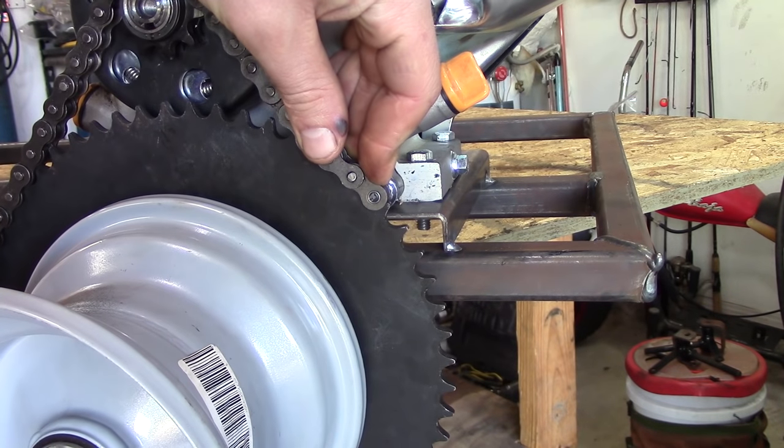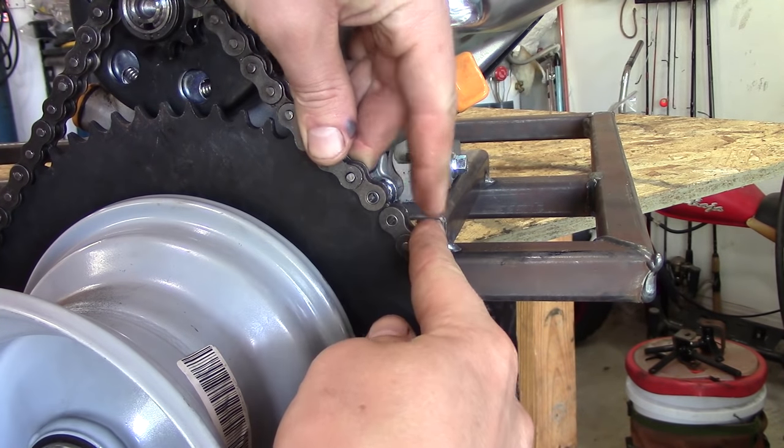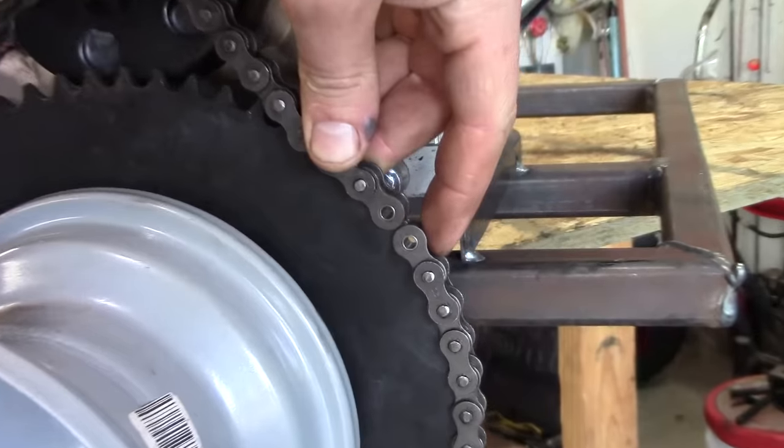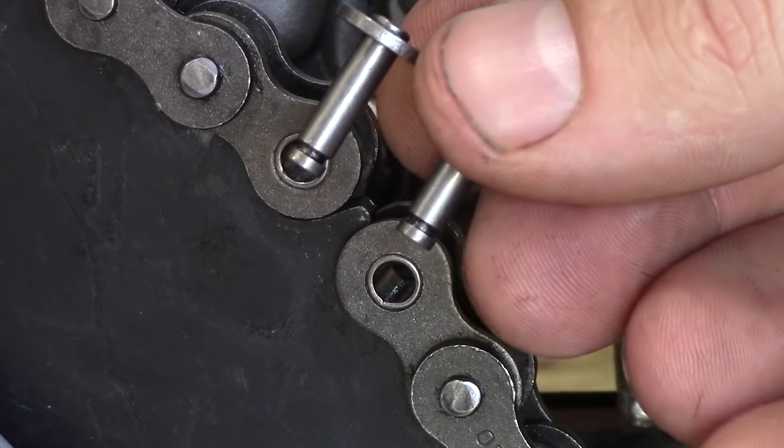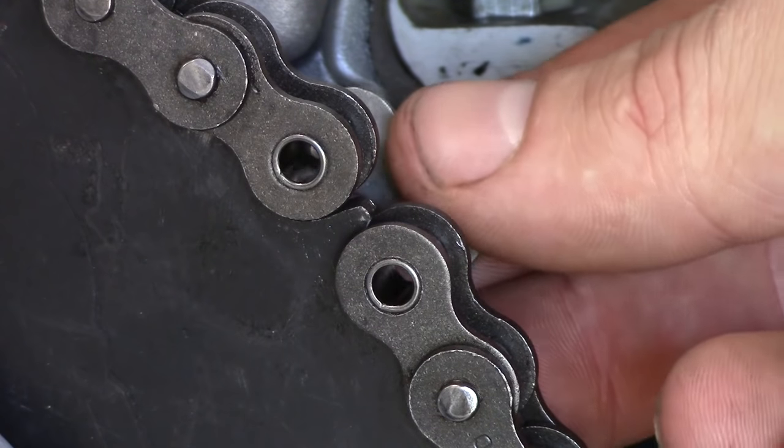The first step is taking both ends of the chain and you want to line them up and make sure you do it right on the sprocket. It makes for an easy install of the pins and the plate because they're already spaced for you.